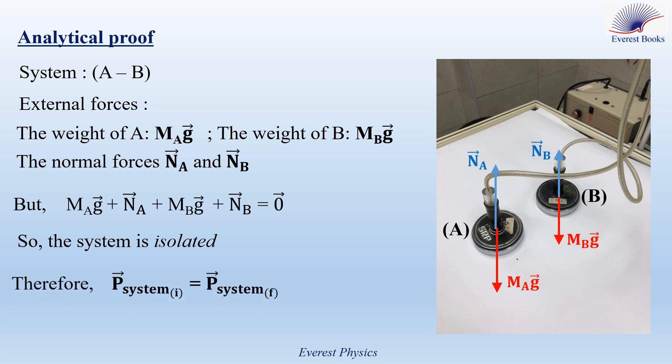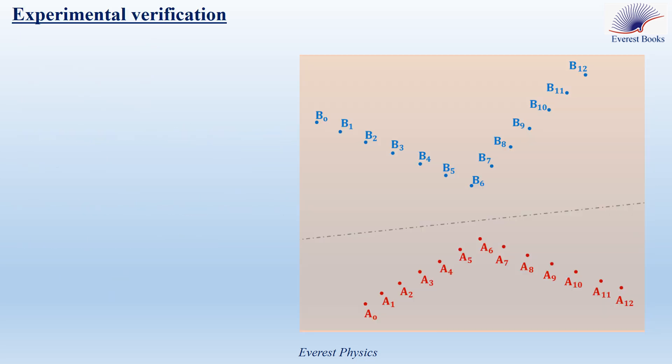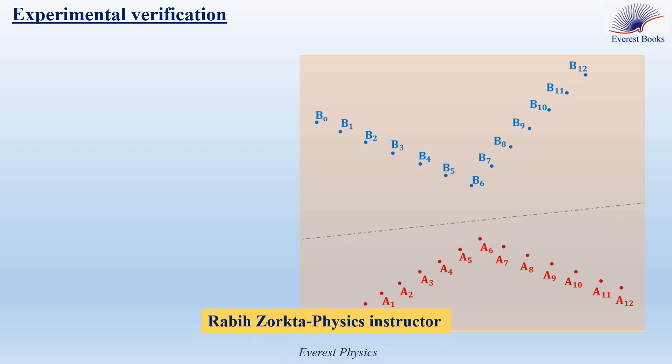Therefore, we have an isolated system and its linear momentum is conserved. So, the linear momentum of the system before the collision is equal to the linear momentum of the system after the collision. Now, we are going to verify experimentally that the linear momentum of the system of two pucks is conserved during collision. We have to determine the linear momentum of the system before collision and after collision, and these two linear momenta should be equal.